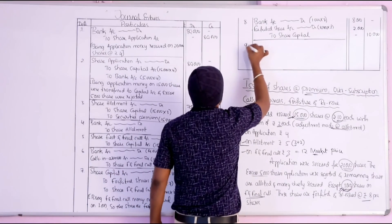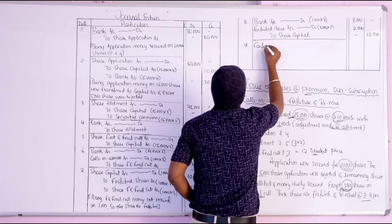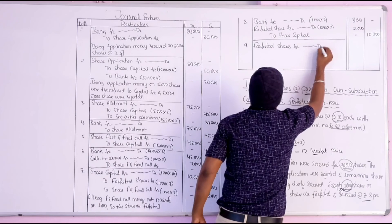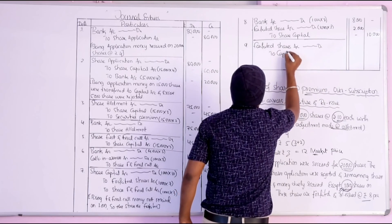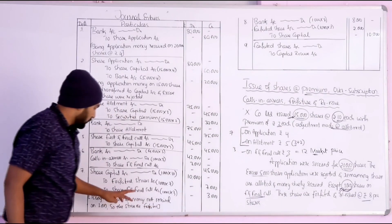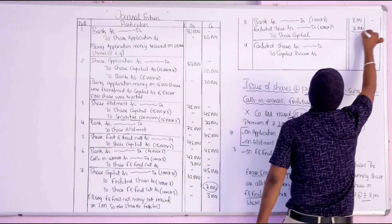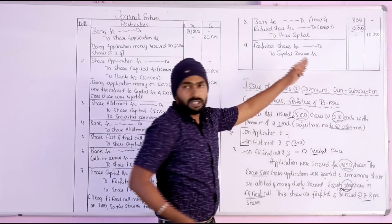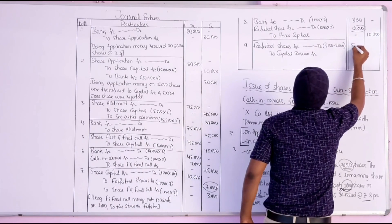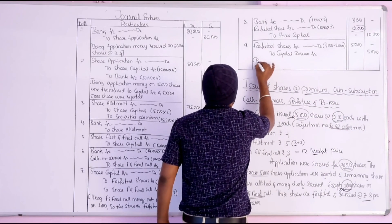The last entry is to transfer any balance in forfeited shares account to capital reserve. Forfeited shares account credit was 7,000. Debit side was 2,000. Remaining 7,000 minus 2,000 equals 5,000 rupees transferred to capital reserve.